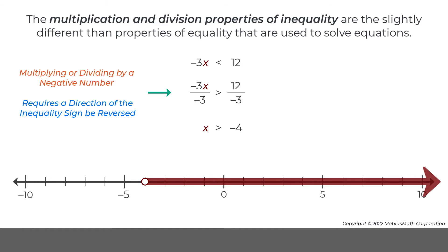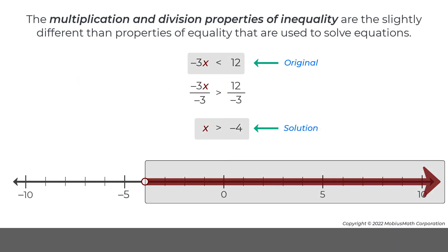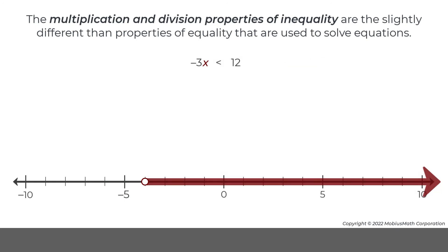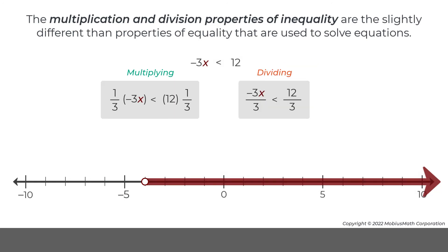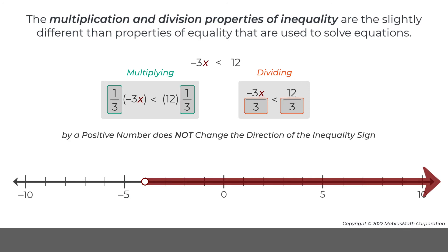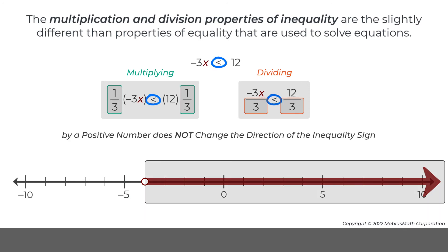So, dividing both sides of the inequality by negative 3 and changing the direction of the inequality sign generates the solution to this inequality. Note, multiplying or dividing both sides of an inequality by a positive number does not change the direction of the inequality sign.